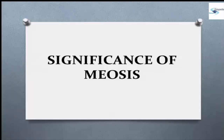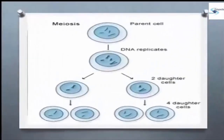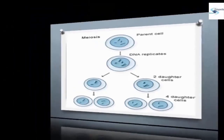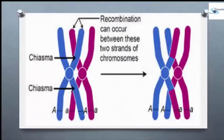Meiosis has the greatest significance for the biological world because meiosis maintains a definite and constant number of chromosomes in the organisms. By crossing over, meiosis provides an opportunity for the exchange of genes and thus causes genetical variation among the species.